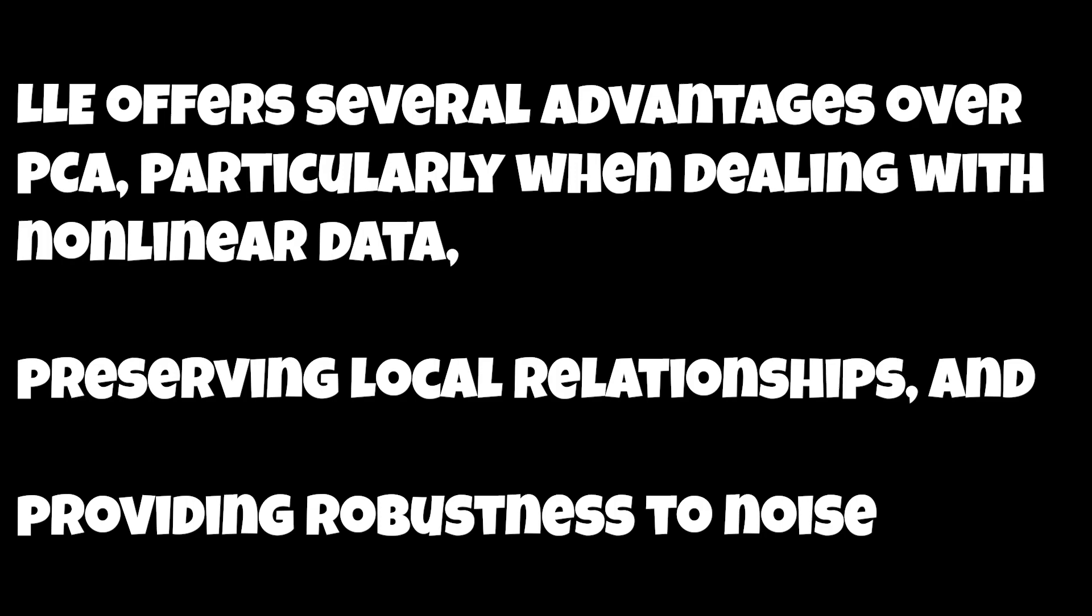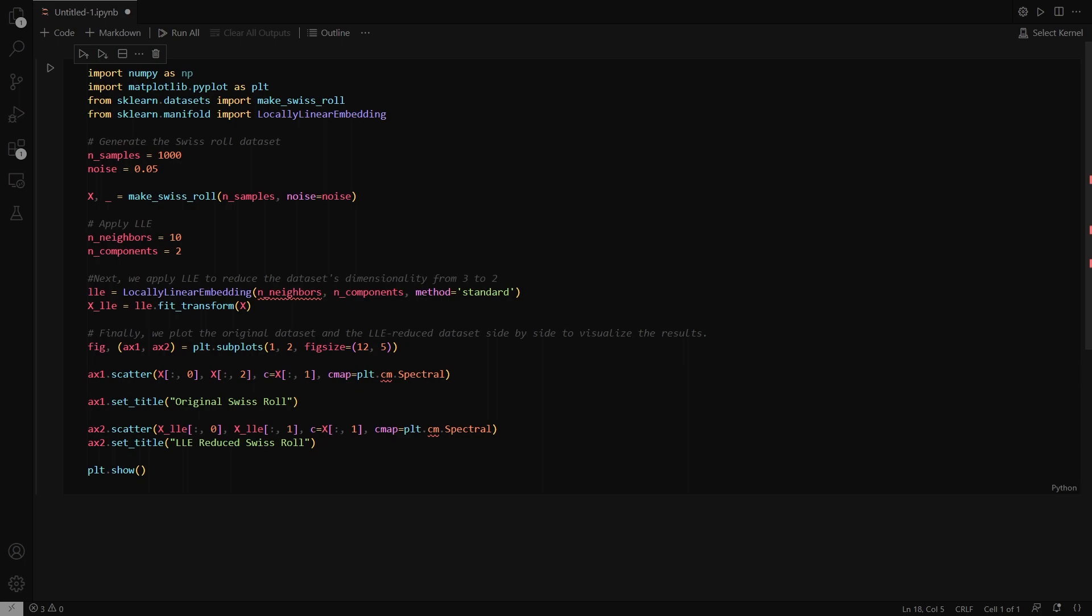Here is a quick implementation of locally linear embedding with sklearn.manifold module. Initially, just import all the necessary modules. To create my input dataset, I'm making use of MakeSwissRoll dataset from sklearn.datasets.